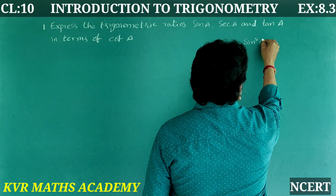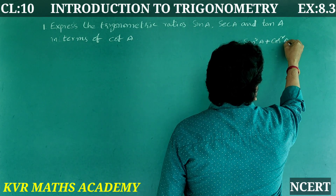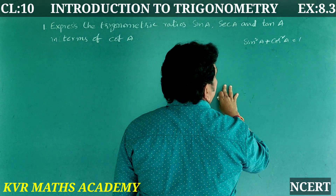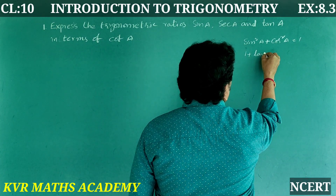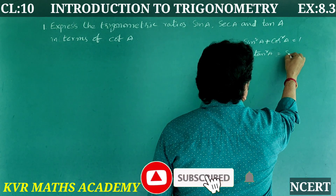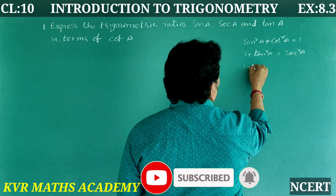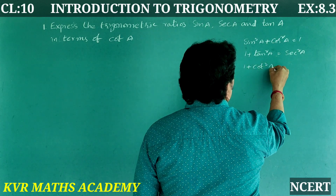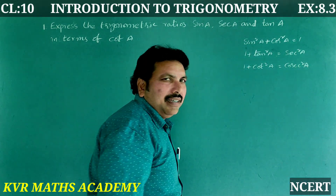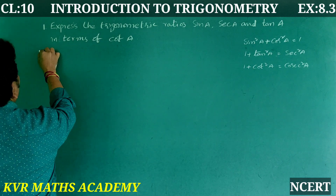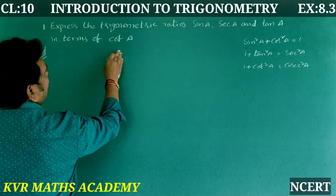The three trigonometric identities are: first, sin²A + cos²A = 1; second, 1 + tan²A = sec²A; and third, 1 + cot²A = cosec²A.